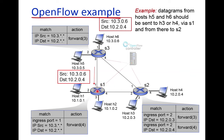At switch S1, the forwarding table is built by the controller. The table has three fields: ingress switch port, source IP, and destination IP. This packet has arrived on port number 1 at switch S1. The ingress port is 1 and the source IP address is 10.3.x.x, so these fields match the corresponding entry in S1's flow table.